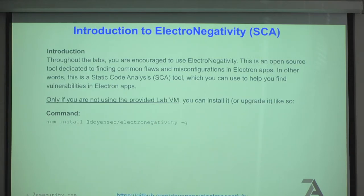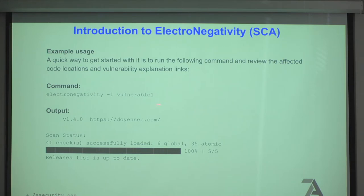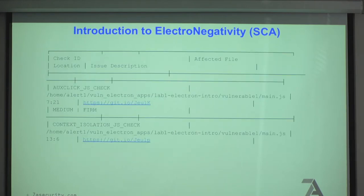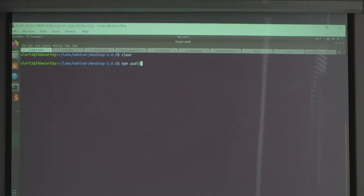Another thing is to look for vulnerabilities using Electronegativity, maintained by DoyenSec. Run: npm install -g @doyensec/electronegativity. That installs it globally so you can run it as a system tool. Then you can run it against the VulnerableOne application, and it will look for lots of vulnerabilities in Electron, giving you many findings.